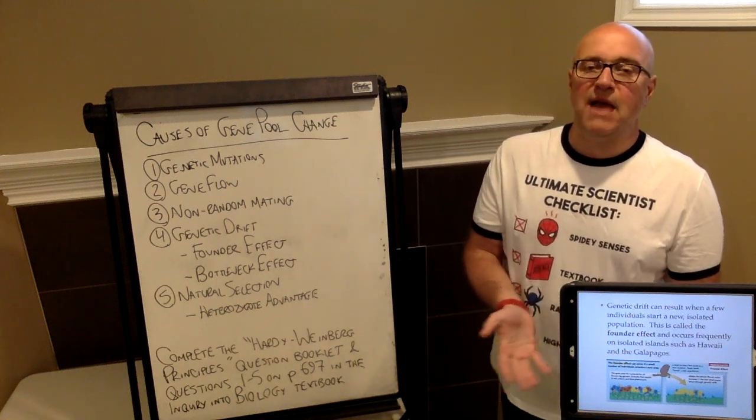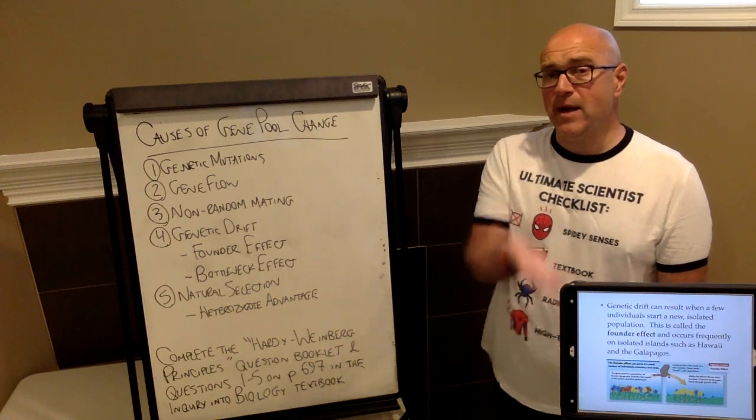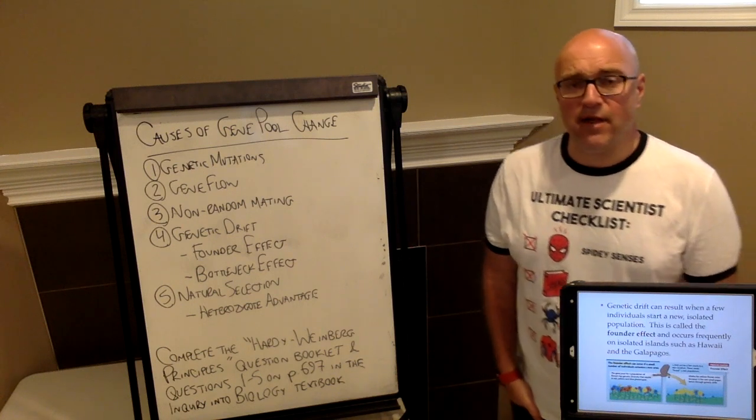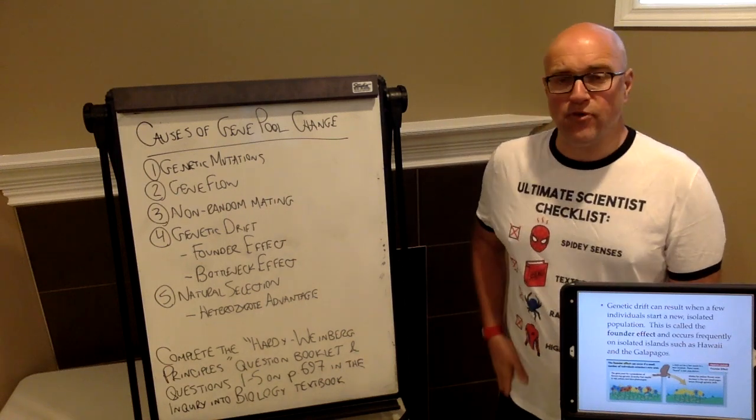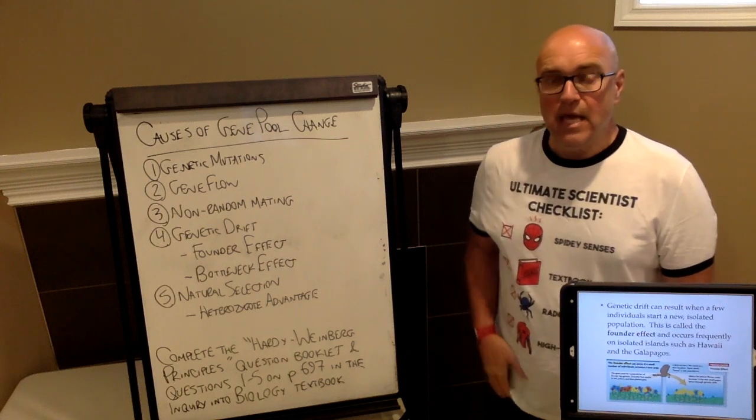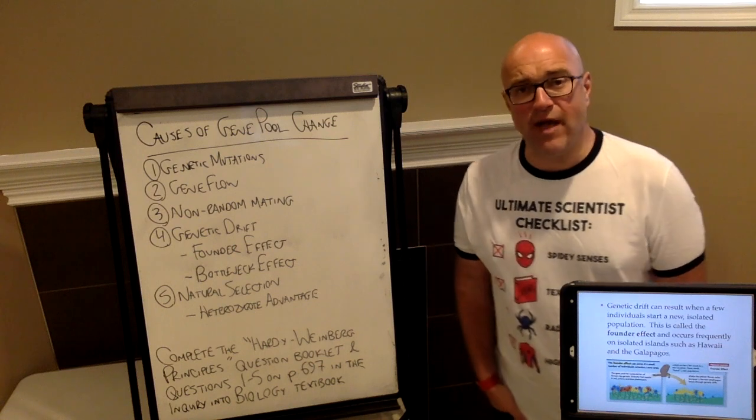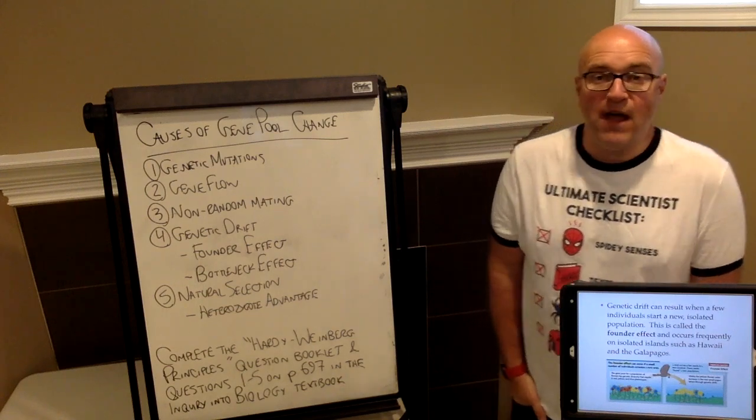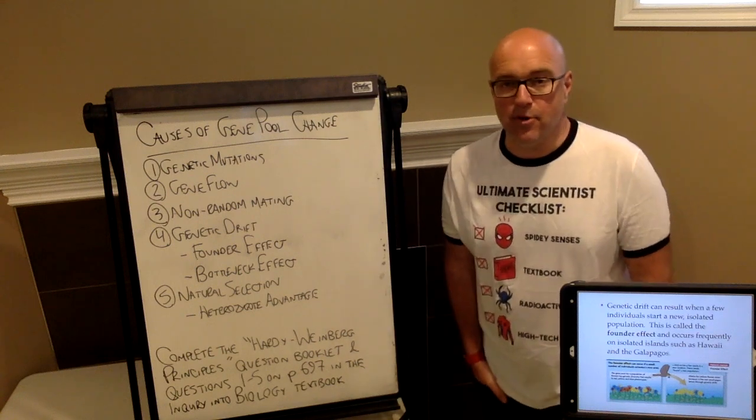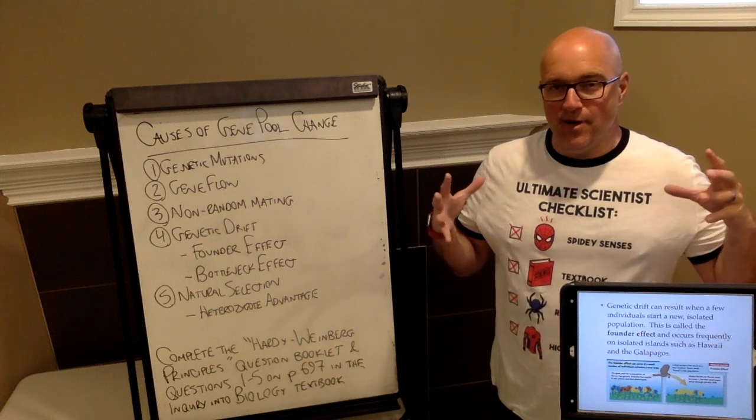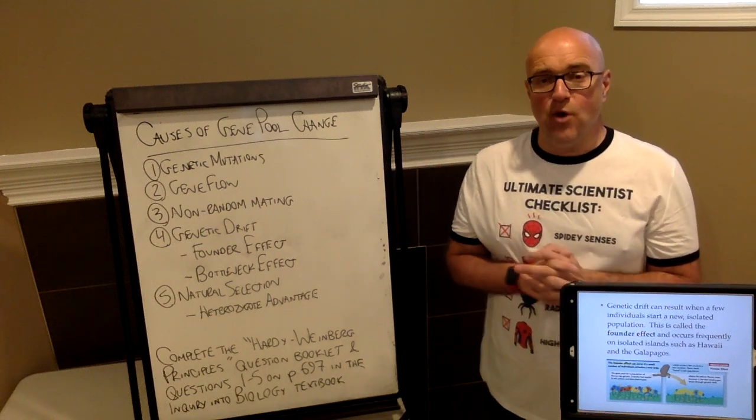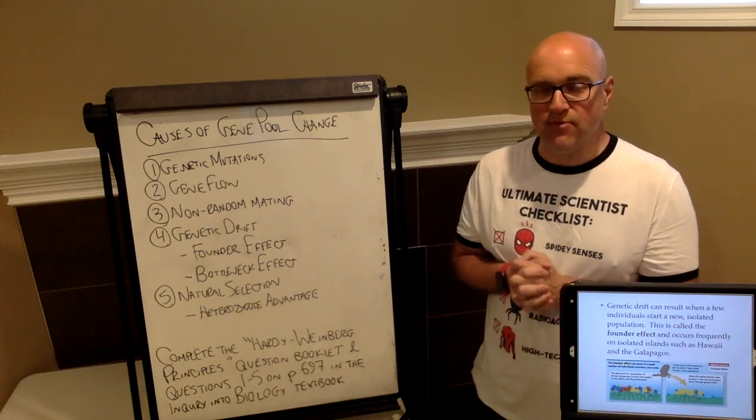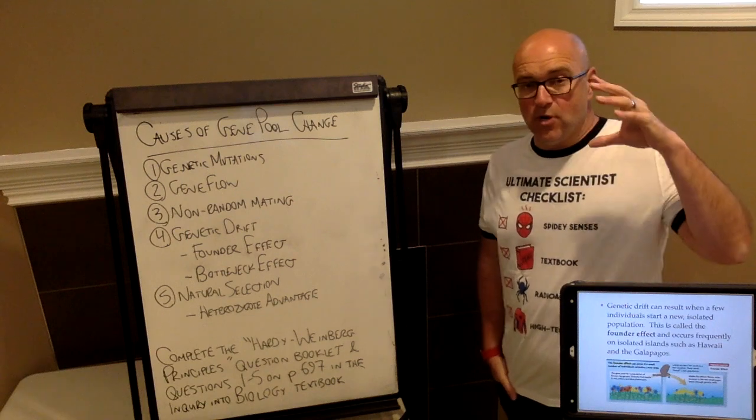There's a couple of specific examples that are linked with genetic drift. One of them is called the founder's effect. Let's say I have a mainland population of organisms, mockingbirds from the mainland of South America. A couple of these mockingbirds somehow get swept out across the ocean. They wind up on a couple of little volcanic islands off the coast of Ecuador. You might remember them as the Galapagos Islands. When those birds arrived on the Galapagos Islands, they were the founders.